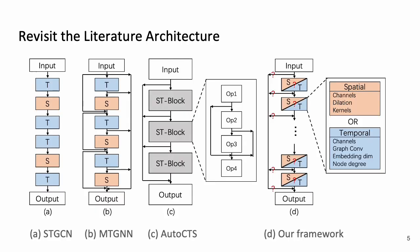To study the relationship between the forecasting quality and the architecture choice, we need to take a step back and revisit the existing literature architectures.